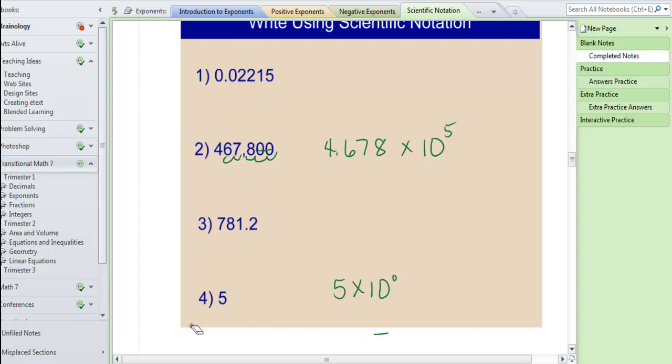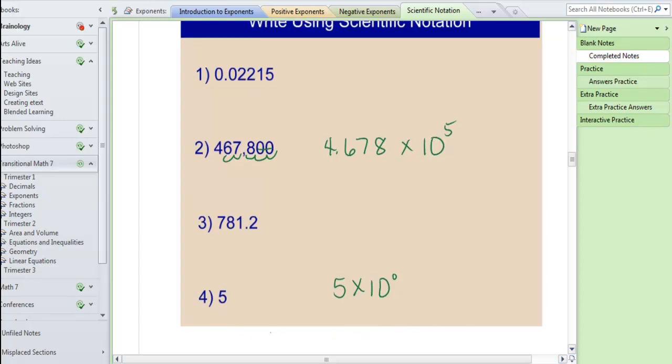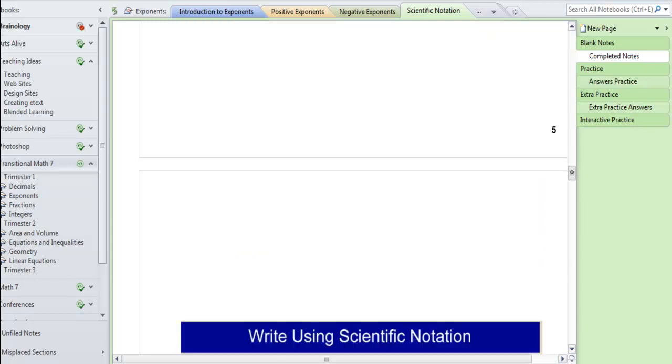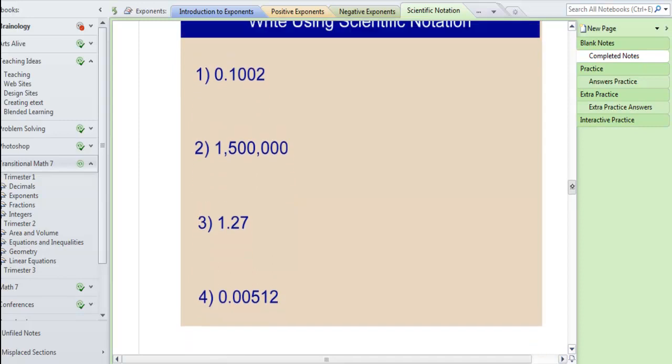So anytime you see a number already written in scientific notation, you're going to multiply it times 10 to the zero power. Go ahead and complete 1 and 3 and then go down to the next page and complete all 4.